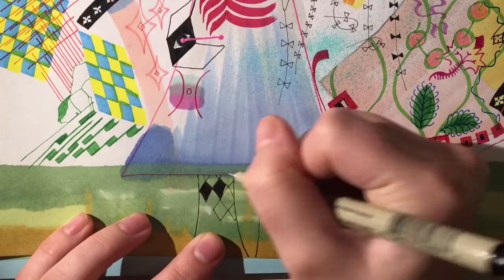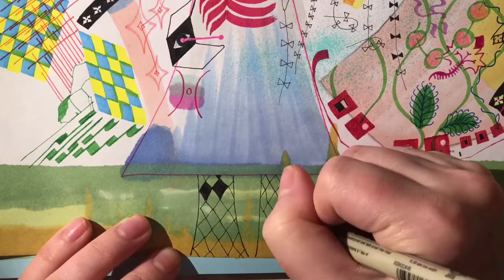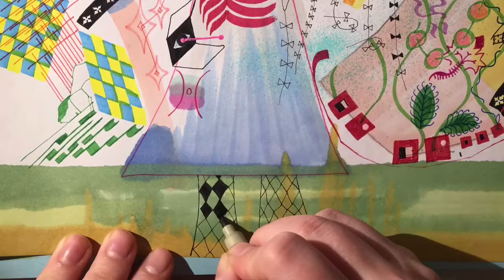These are the discrete auroras, which are at times bright enough to read a newspaper by at night and can display rapid sub-second variations in intensity.